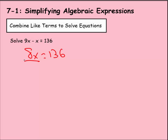Then we have 136 over here. So to solve for x, we can divide by 8 on both sides. And then we have x over here. And that's going to equal 136 divided by 8, which is 17. So x equals 17 as our answer.